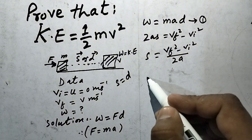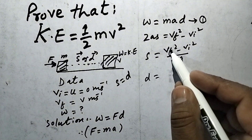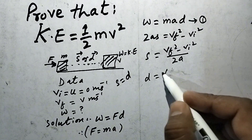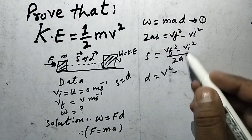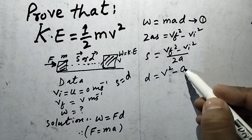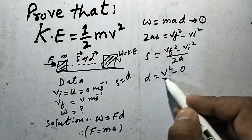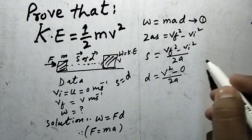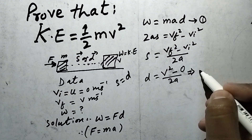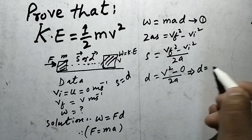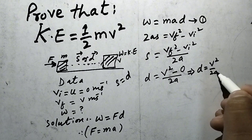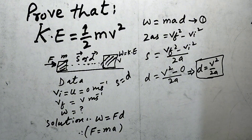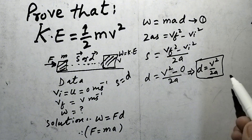So D equals VF square minus Vi square upon 2a. The value of VF is V, so VF square is V square. Vi is 0, so Vi square is 0. Therefore D equals V square divided by 2a.